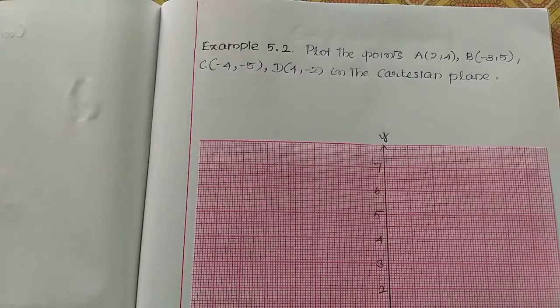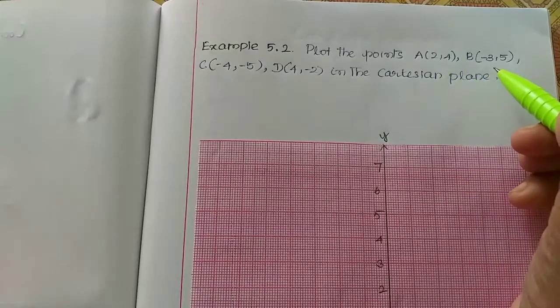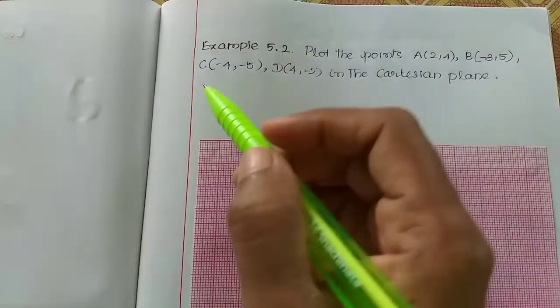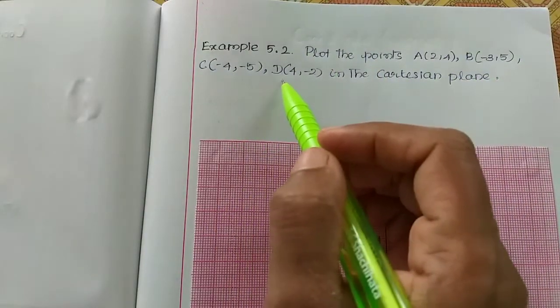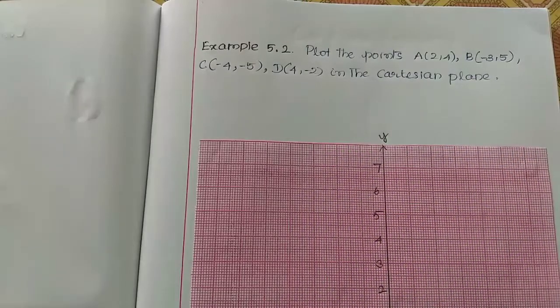Hi students, in this video we will see example 5.2. Plot the points A(2,4), B(-3,5), C(-4,-5), and D(4,-2) in the Cartesian plane.